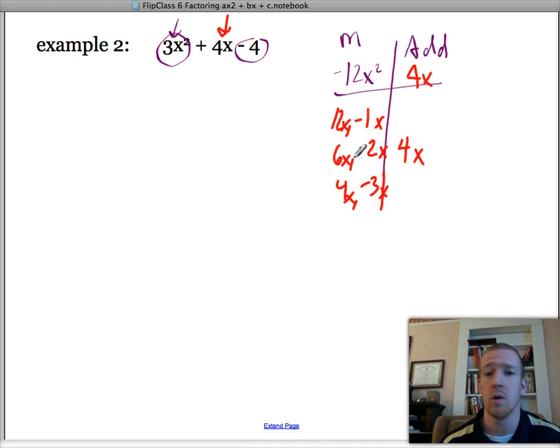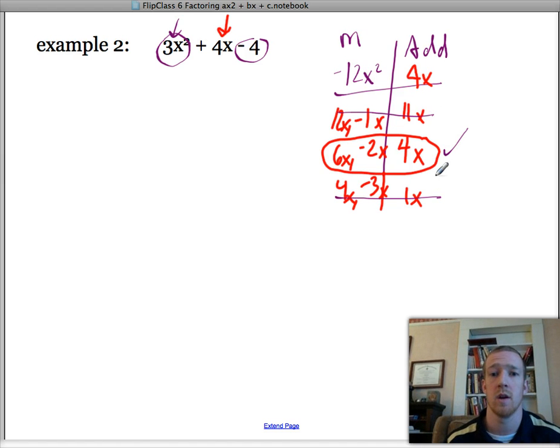Now, if you don't notice this right away, that it's this one, then you can go through all the possibilities, write out all the sums. So this is 11x, this is 1x, and you see that none of these work. That doesn't work, that doesn't work. This is our pair. Alright, so 6x and negative 2x are our numbers we're going to use. So that means we're going to split this up into two pieces. So we still have our 3x squared, and we have our plus 6x and minus 2x and minus 4.